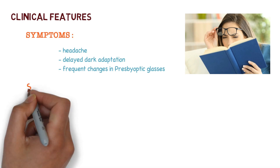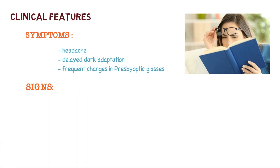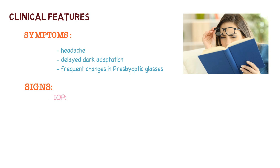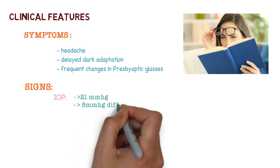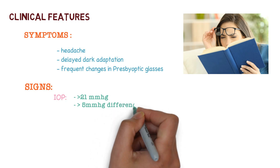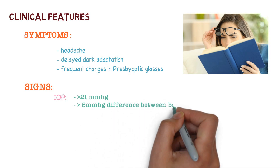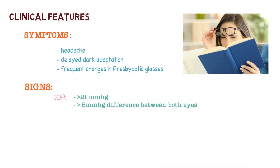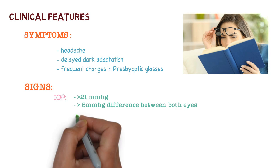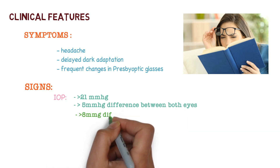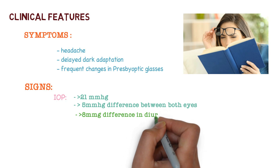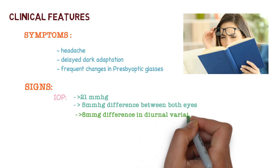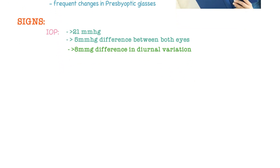Now the signs: intraocular pressure is raised, more than 21 mmHg. There may be a difference between both eyes, and this difference is more than 5 mmHg. There can also be diurnal variation, and this diurnal variation is more than 8 mmHg difference.